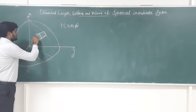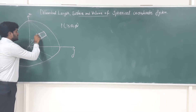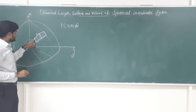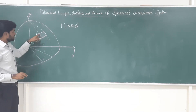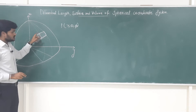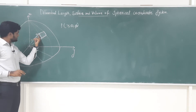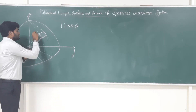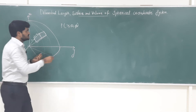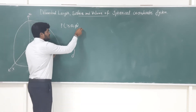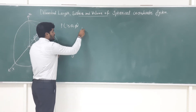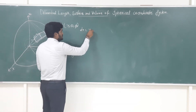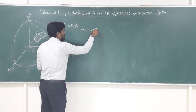Consider this length: this point is r1 and this point is r2. This length is denoted as dr, that is dr = r2 − r1.